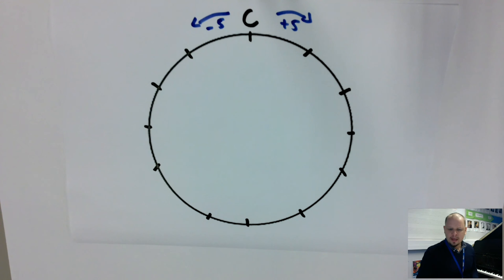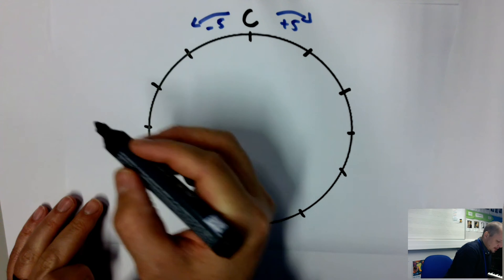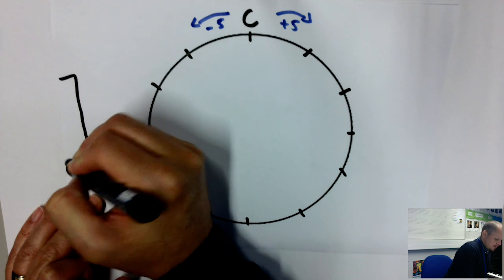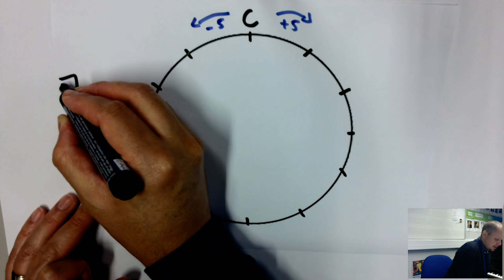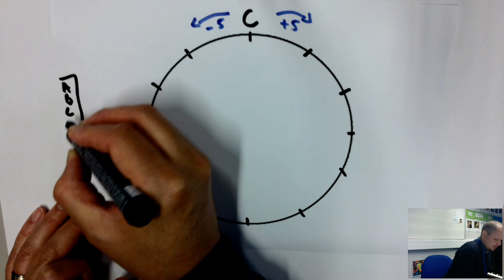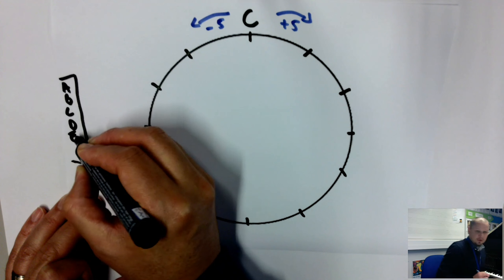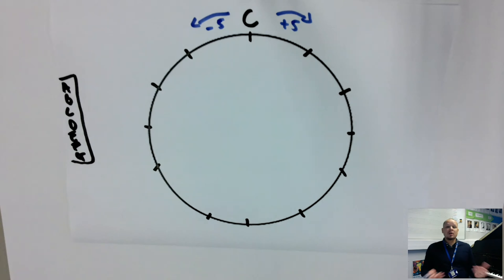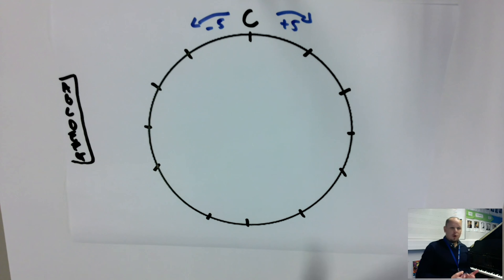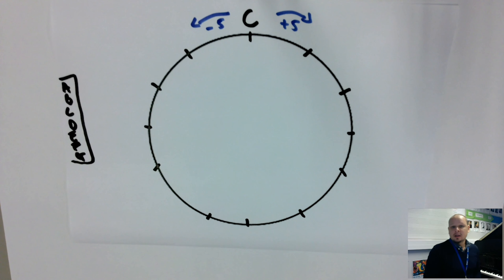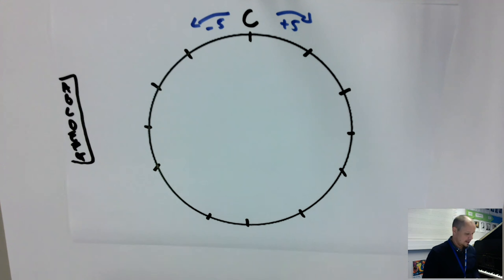We just have those seven letter names: A, B, C, D, E, F, and G. Those are the only notes that we can add sharps and flats to. Therefore, the key with the most sharps would have seven sharps, and the key with the most flats would have seven flats, because we only have those seven letter names to deal with.